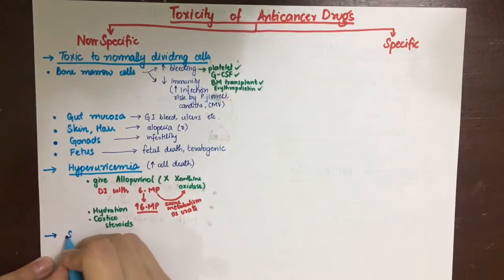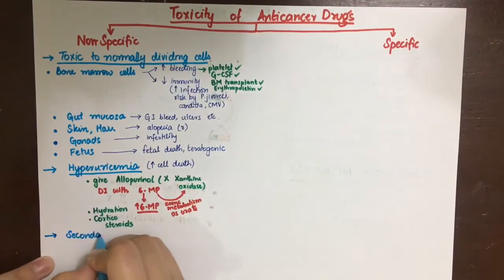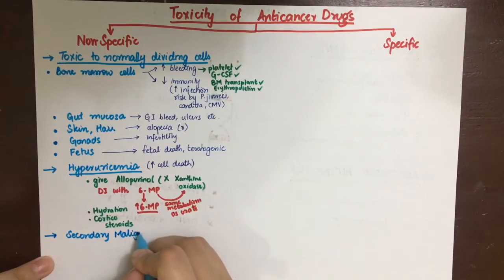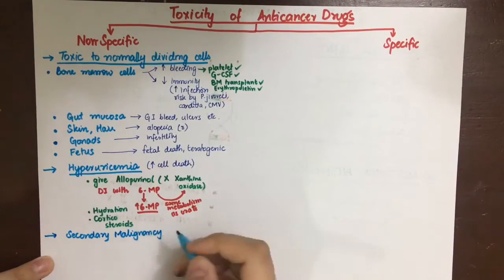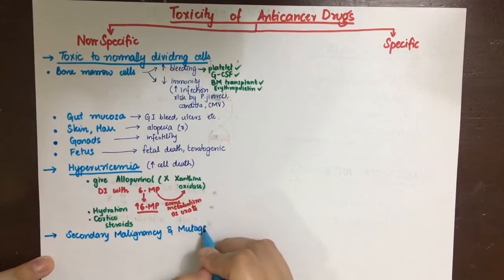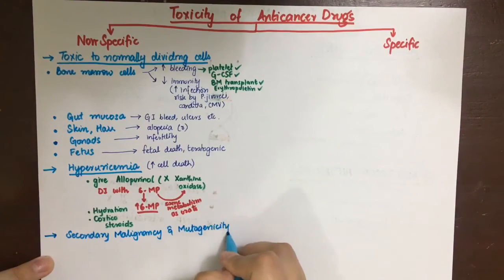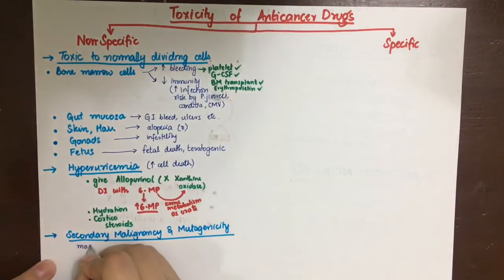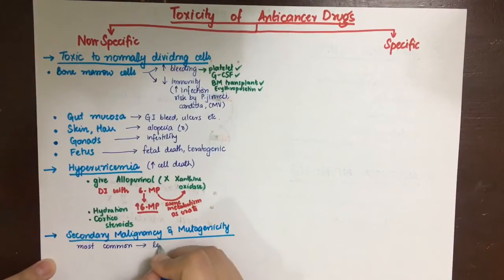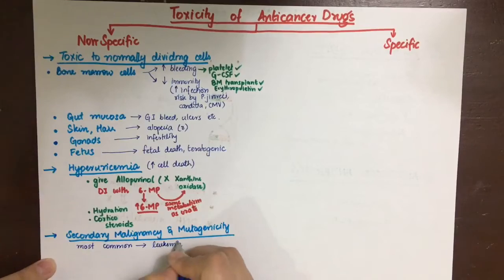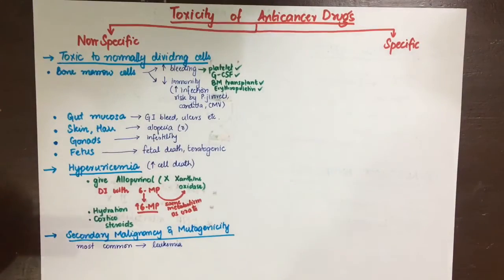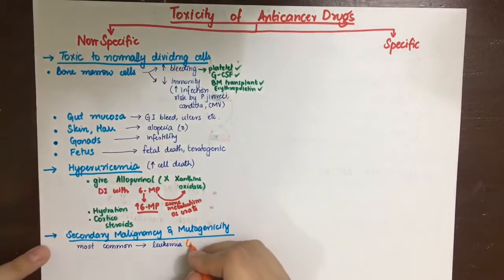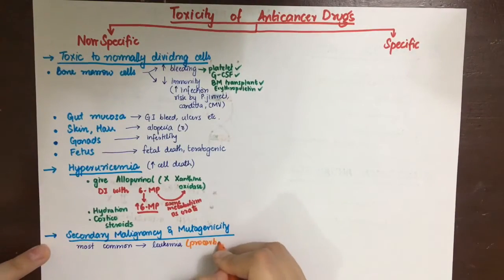Anti-cancer drugs have also been associated with secondary malignancy or mutagenicity, because they damage DNA by interfering with it, which can lead to mutations and cancers — most commonly leukemias. The drug most associated with secondary leukemias is procarbazine.